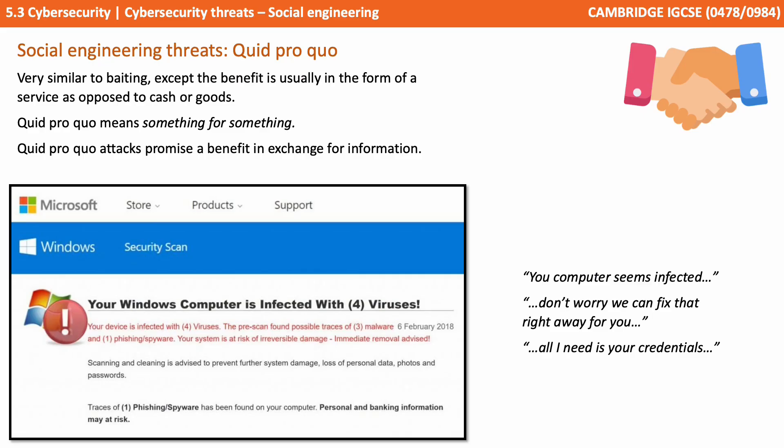And finally we have quid pro quo. This is very similar to baiting, except the benefit is usually in the form of a service as opposed to cash or goods. Quid pro quo literally means something for something. With quid pro quo attacks, they promise a benefit in exchange for your information.